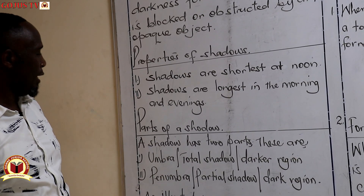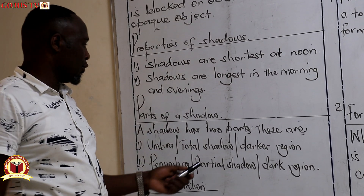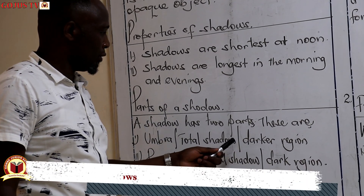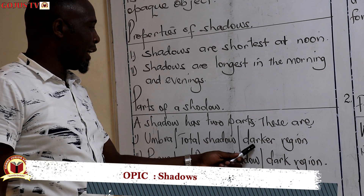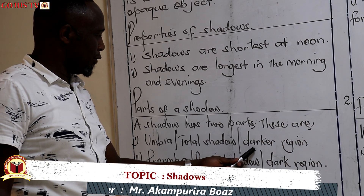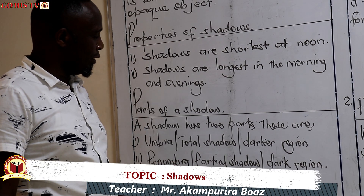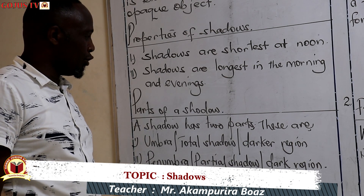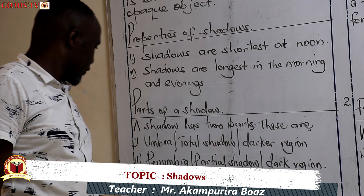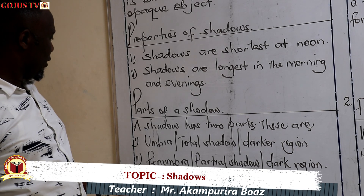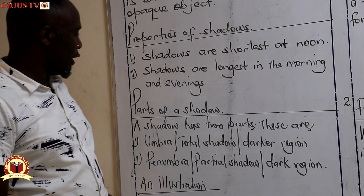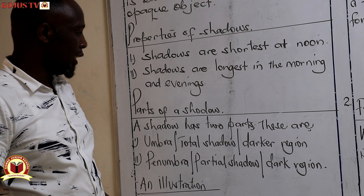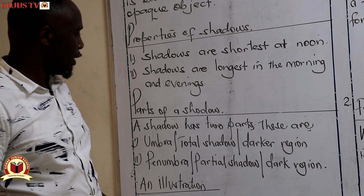Shadows have two parts. The first is the umbra, which we can also call the total shadow or the darker region of the shadow. We say 'darker' because when comparing two objects and following the degrees of adjectives, we don't say 'the darkest region' but 'the darker region.' The second part is the penumbra, which we can also call the partial shadow or the dark region of the shadow.